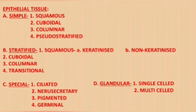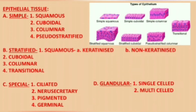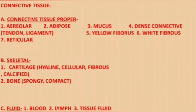Epithelial tissue can be classified as simple epithelial, stratified epithelial, and special types. Simple includes squamous, cuboidal, columnar, and pseudostratified. Stratified can be squamous keratinized, non-keratinized, cuboidal, columnar, and transitional. Special types include ciliated, neurosecretory, pigmented, and germinal. Glandular epithelium consists of single-celled and multi-celled forms.